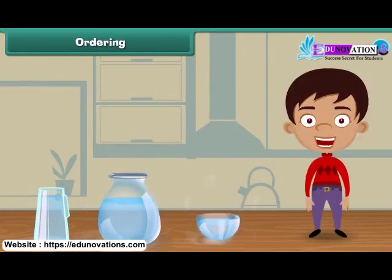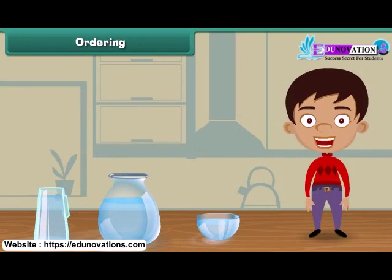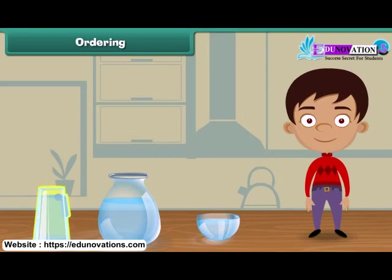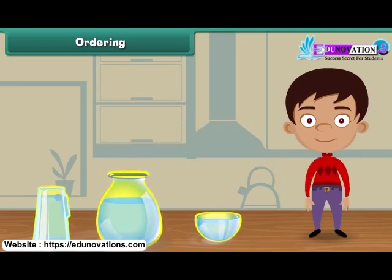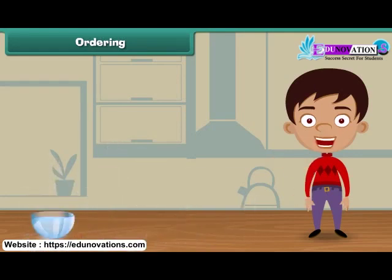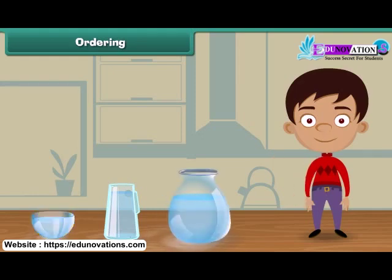Friends, we have three different vessels. Which vessel holds the least water? Yes, you are right. The bowl holds the least water. A jar holds more water than the bowl, and the pot holds more water than the bowl and the jar. Let us now arrange these vessels in increasing order. Bowl comes first because it holds the least water. The next in the row is the jar as it holds more water than the bowl. At last we place the pot because it holds more water than the bowl and the jar.